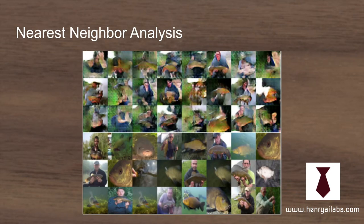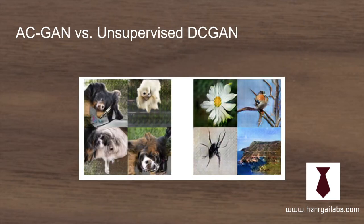They also show a nearest neighbor analysis, taking samples from the ACGAN and using L1 distance to grab the most similar examples from the ImageNet dataset. This shows a comparison over time: the ACGAN compared to the unsupervised DCGAN improved by Salimans et al., whose paper uses no class labels. On the right, it shows how class labels, in addition to this ACGAN extension, can really improve the quality of generated images.